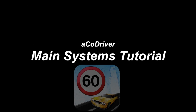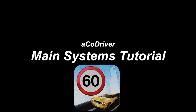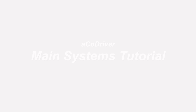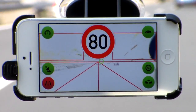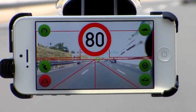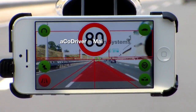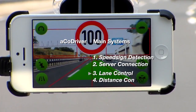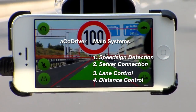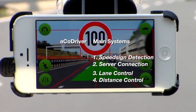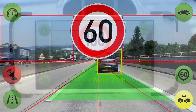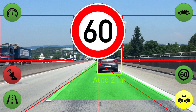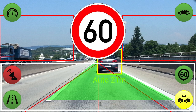Hello and welcome to the Code Driver main systems tutorial. The Code Driver has four main systems: speed sign detection, server connection, lane control, and distance control. The control elements for the main subsystems are located in the lower part of the screen.